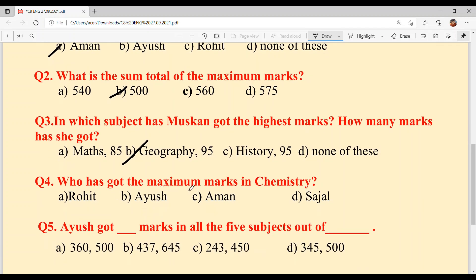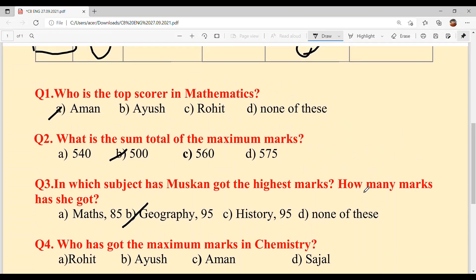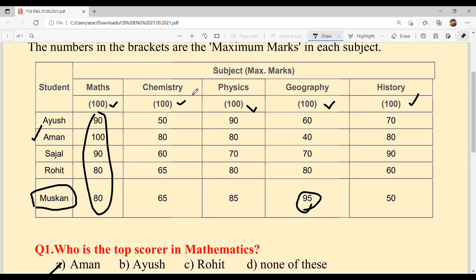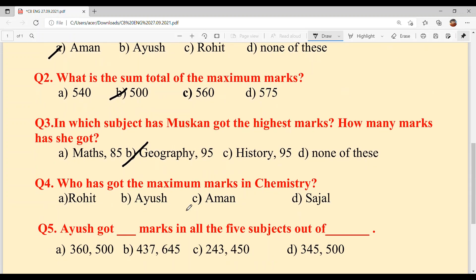Question 4: Who has got the maximum marks in Chemistry? Options are a) Rohit, b) Ayush, c) Aman, and d) Sejal. Who has the highest marks in Chemistry? It's 80 - Aman. The most intelligent student is Aman. Again and again, Aman is the answer. Option C.